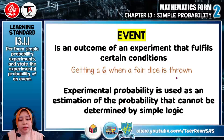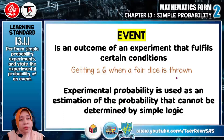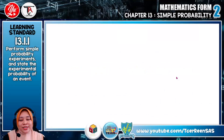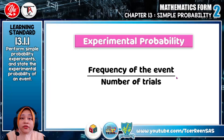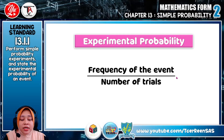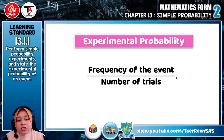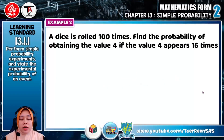Experimental probability is used as an estimation of the probability that cannot be determined by simple logic. Experimental probability is a simple ratio of the frequency of an event occurring to the number of times the activity is repeated. This is the formula: frequency of the event divided by the number of trials.